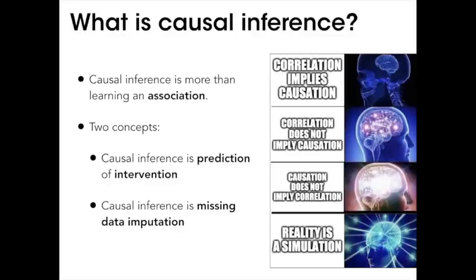Causal inference is more than that, and there are two kinds of metaphors you can use to grapple with it, even though they're really the same thing. The first is the idea that causal inference is about a special kind of prediction — predicting the consequences of doing something, predicting an intervention. Different from Mars: Ptolemy could predict where Mars was because he wasn't going to push it. But if you want to launch a probe to Mars, you have to get the physical structure right — that's an intervention. Causal inference is about accurately predicting the consequences of an intervention.